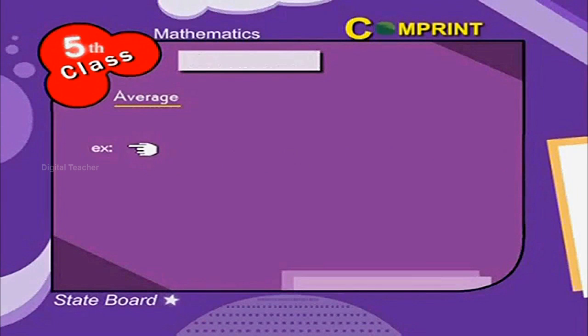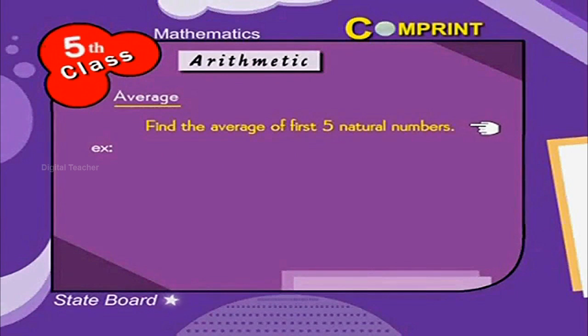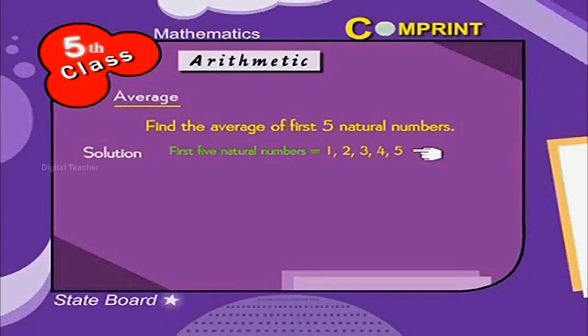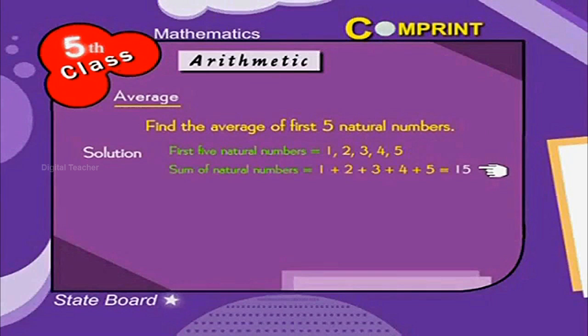For example, find the average of first 5 natural numbers. For the solution, first 5 natural numbers is equal to 1, 2, 3, 4, 5. Sum of natural numbers is 1 plus 2 plus 3 plus 4 plus 5 is equal to 15.